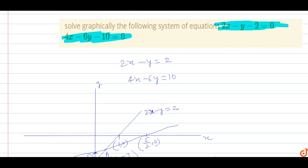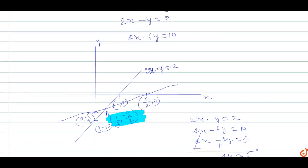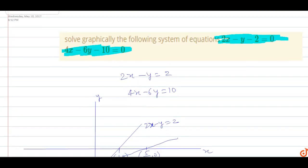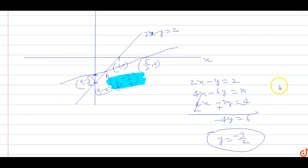So the intersection point is (1/4, -3/2). This is the answer for this question.